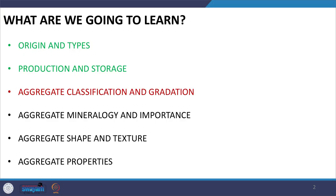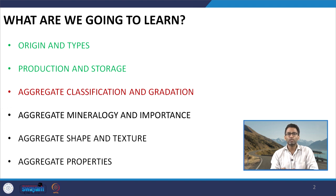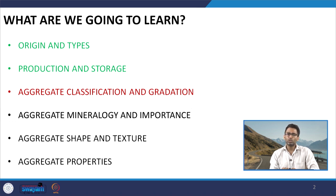Hello everyone, welcome back. In the last class we discussed the production and storage of aggregates, including quarrying operations where aggregates are mechanically crushed and stockpiled into different sizes. We discussed storage in the form of stockpiles and sampling locations, concluding that the conveyor belt is one of the most convenient places for sampling as segregation is minimal.